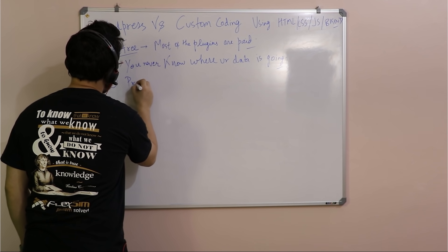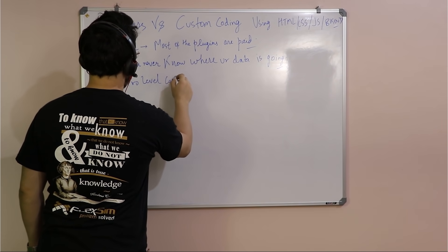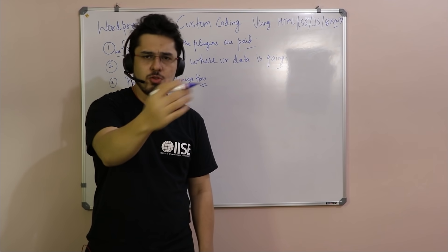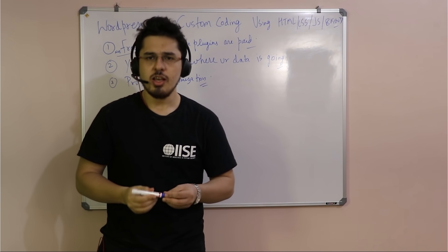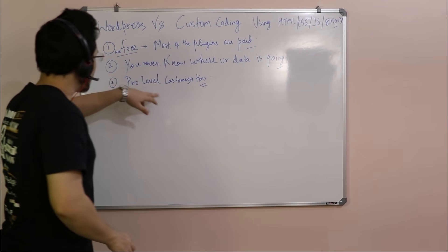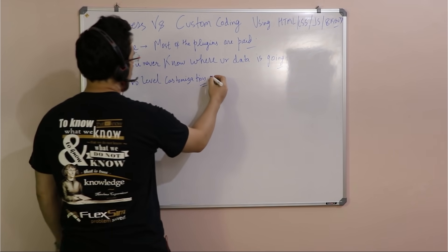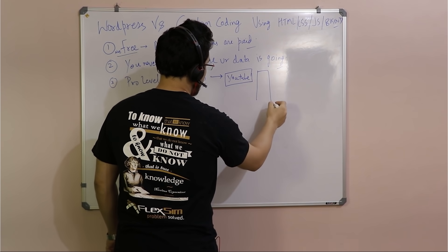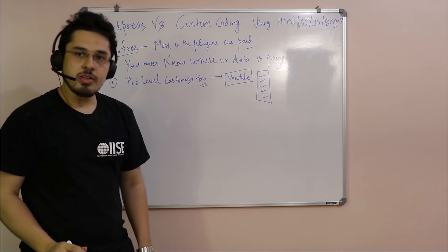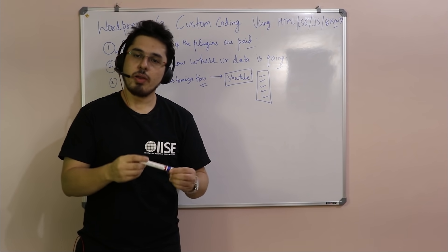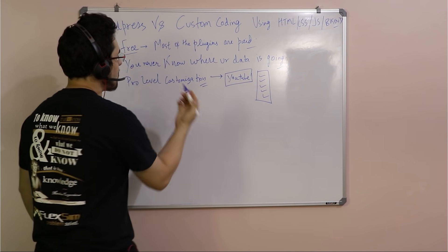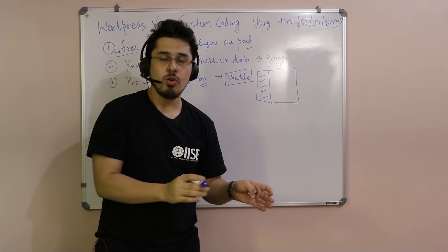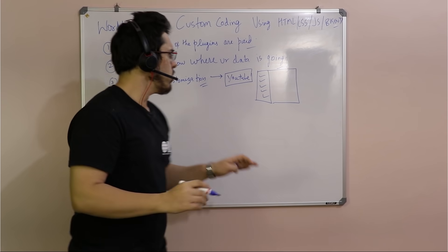The next point: pro-level customizations you cannot do in WordPress. There will always be some plugin for something, but not for everything — and not always a plugin that perfectly fits your needs. If you need to show YouTube playlists on your blog, a WordPress developer will look for a plugin. If that plugin doesn't exist, what do you do? You will understand the limitations of WordPress.